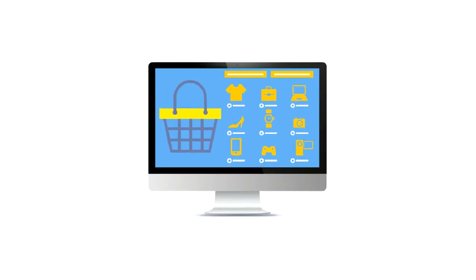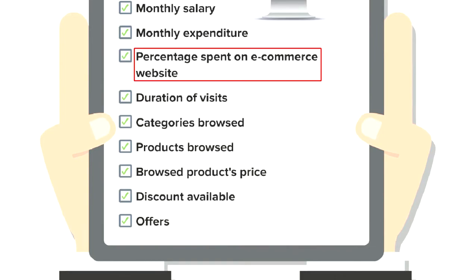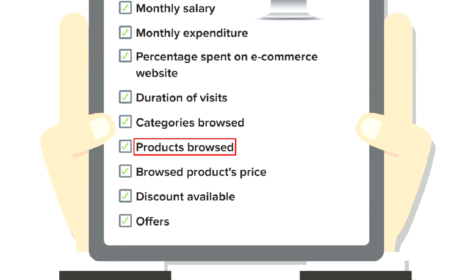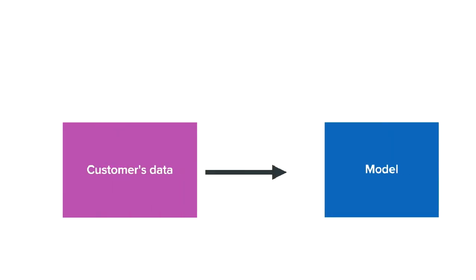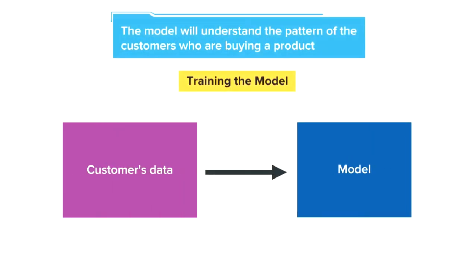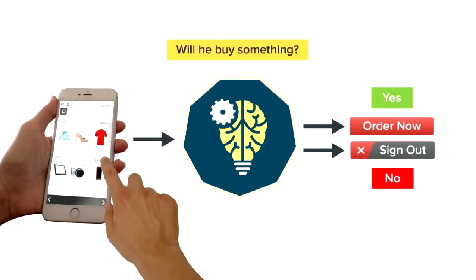For example, let's say we have labeled data of customers from a particular eCommerce website. We have information like name of the customer, gender, age, occupation, monthly salary, monthly expenditure, percentage spent on eCommerce websites, duration of visits, categories browsed, products browsed, browsed products price, discount available, offers, and finally a target variable of number of products purchased in the last one month. We can train our model using this data, and the model will understand the pattern of customers who are buying a product. Based on its learning, the model can predict whether a new customer will buy a product or not based on other variable information of that customer.